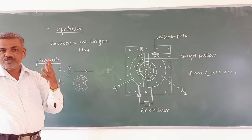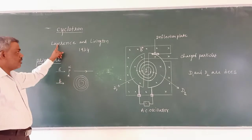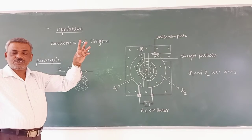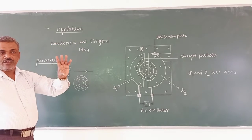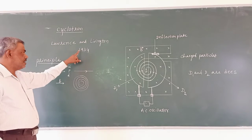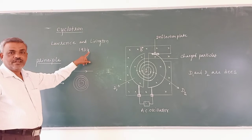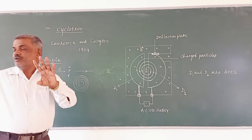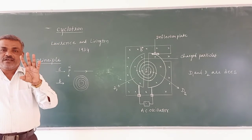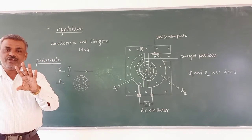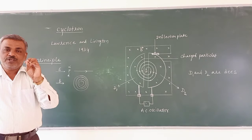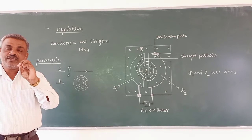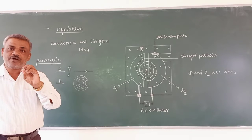Lawrence and Livingston first invented the cyclotron in the year 1934. The cyclotron uses a combination of both electric and magnetic fields. This combination produces high energy charged particles.